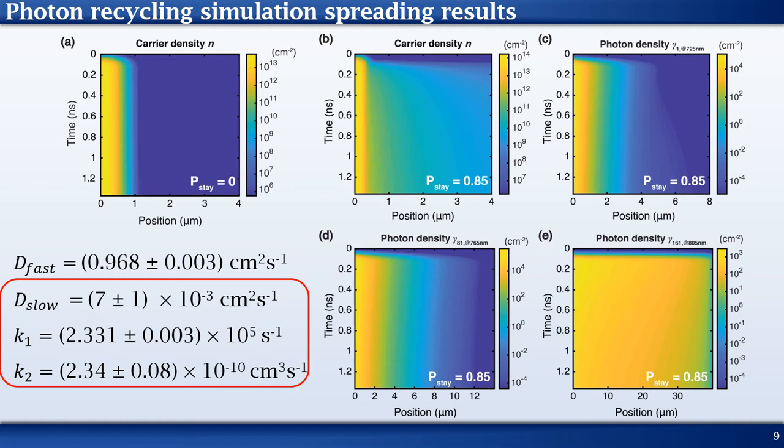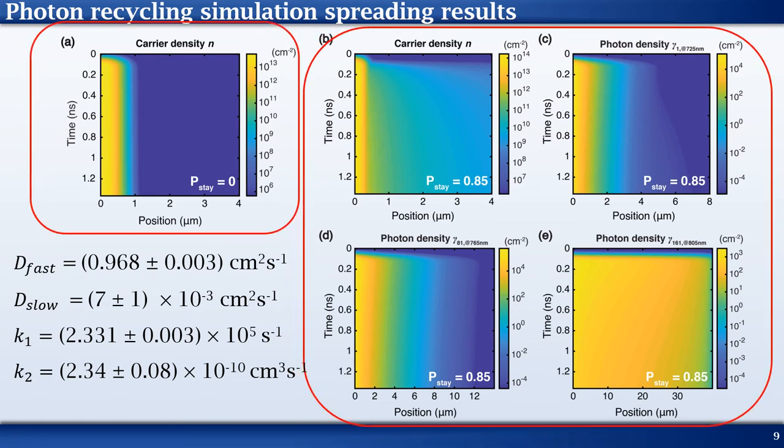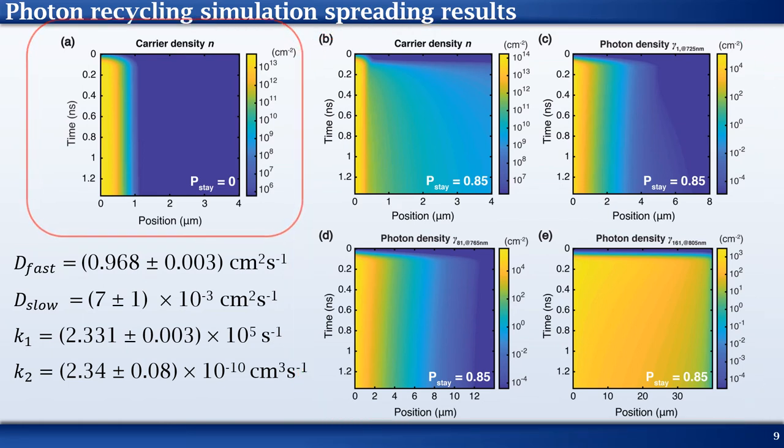We have also extracted the recombination coefficients in the longer time window. Using these values and the slow regime diffusion coefficient, we model photon recycling and simulation results are shown here for two cases. First, we have p_state equals to 0, which is the case of absence of photon recycling. In this case, no photons are generated by the source term in the second continuity equation. Consequently, only results for charge carriers are shown in panel A.